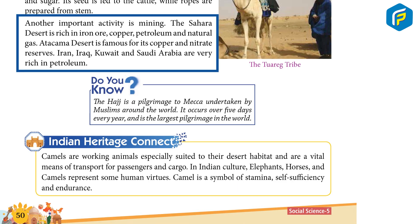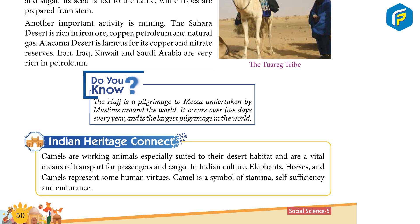Another important activity is mining. The Sahara Desert is rich in iron ore, copper, petroleum, and natural gas. The Atacama Desert is famous for its copper and nitrate reserves. Iran, Iraq, Kuwait, and Saudi Arabia are really rich in petroleum.